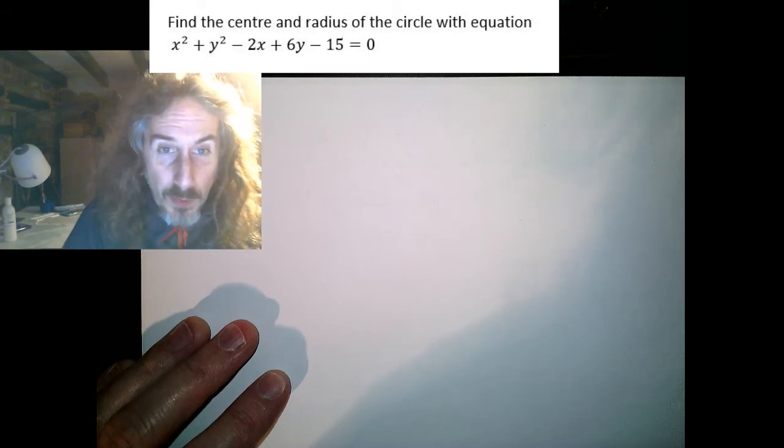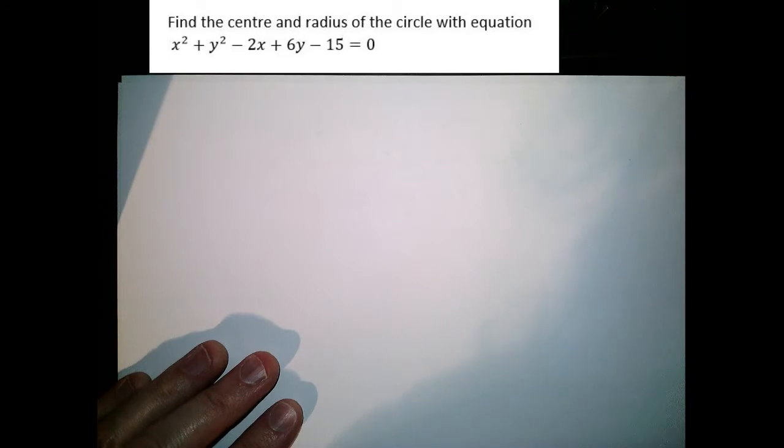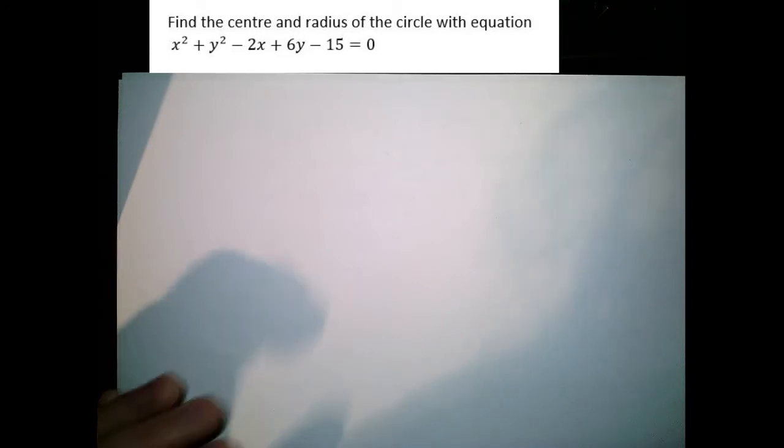So I've got a circle equation I've been given here: x squared plus y squared minus 2x plus 6y minus 15 is zero.